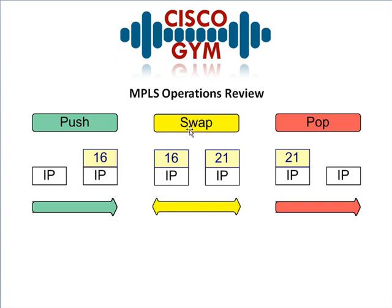Swap is going to be a router that receives a labeled packet and says okay, thank you for this packet with a label. I have a local label assigned for that FEC, and what I'm going to do is swap your label with my label and then route it out the appropriate interface as specified in the LFIB.